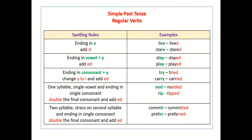Here are some spelling rules to make or create the regular verbs in the simple past tense. First, if the verb ends in E, just add D — like live → lived, stare → stared.